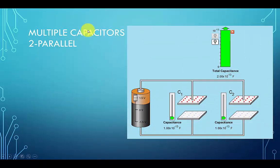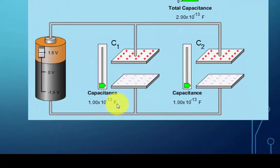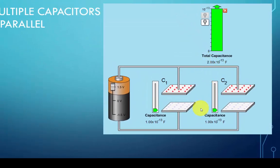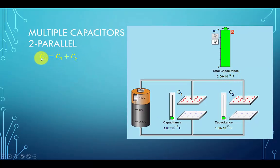So let's take a look at two capacitors connected in parallel. Here we have C1 and C2 connected in parallel, each having a value of 1 times 10 to the minus 13 farad or 0.1 picofarads. When we have a total capacitance, we see it's 2 times 10 to the minus 13 farads. So basically the formula is pretty simple - we just add those two capacitance values.